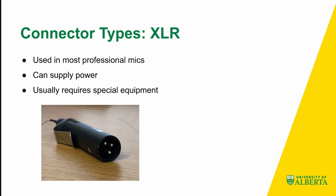The XLR connection is extremely popular with professional equipment because the XLR can actually supply power. To identify an XLR connection, it's usually a metal tube with three prongs on the inside. These three prongs allow it to transmit audio but also to provide power to the microphone — which for a condenser mic can be mandatory, since the other connections don't provide power. It usually requires special equipment; computers generally don't have a built-in XLR input, so you usually need some sort of interface.